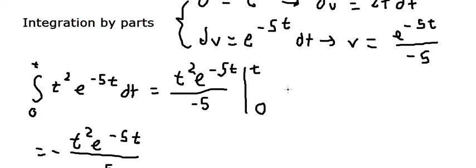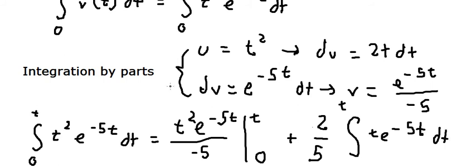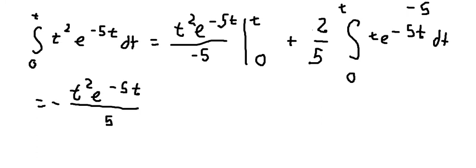And we have positive 1 over 5 times the integral from 0 to T of v dU. So we have 2 over 5, giving us 2 over 5. And we have the integral of t times e to the power of negative 5t dT. So we still need to use integration by parts again.